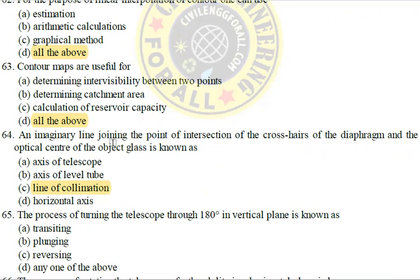Next: An imaginary line joining the point of intersection of the cross-hairs of the diaphragm and the optical center of the object glass is known as the line of collimation.